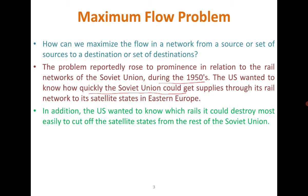So there are two kinds of problems. One is the maximum flow problem: what is the maximum flow that can reach from one place to another using the rail networks? The other problem is: what is the least number of network connections we should destroy so that there is no connection between the two places? We are going to see these problems with mathematical eyes.